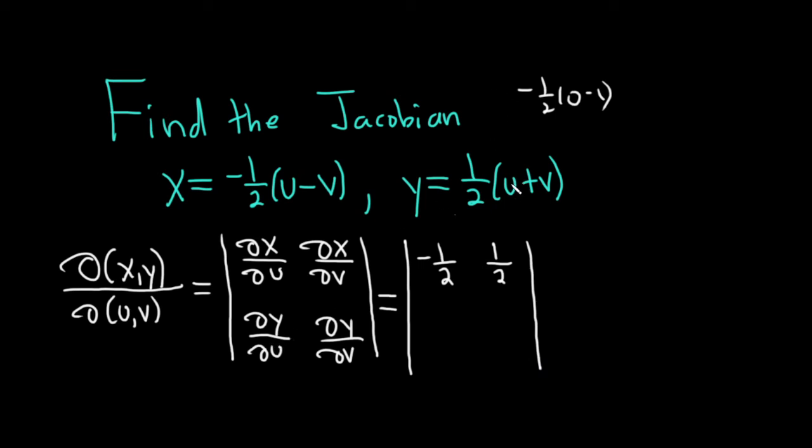Del y, del u, so the partial here, this will be zero. The derivative of u is one, so it's one half. And then del y, del v, well, the derivative of v is one, the derivative of u is zero, so it's also one half.